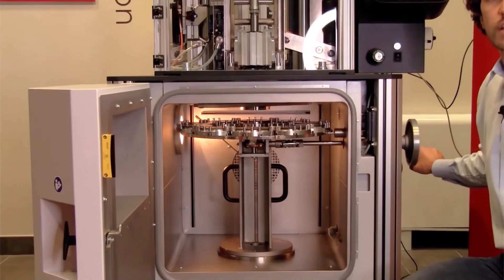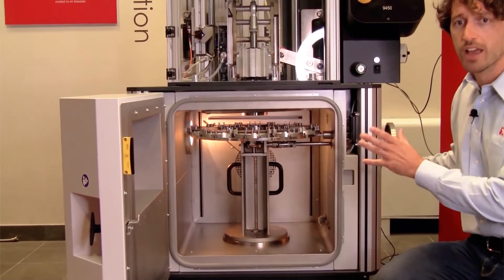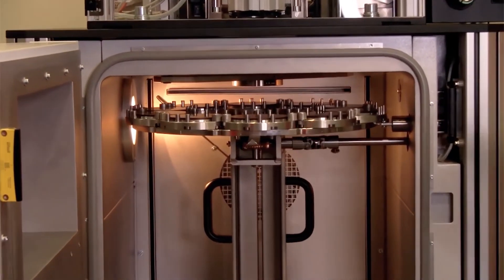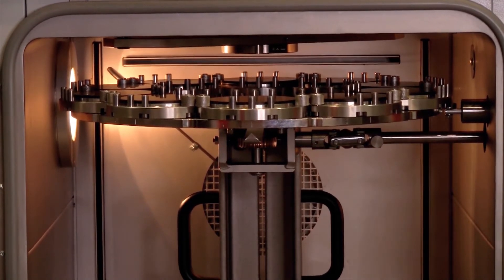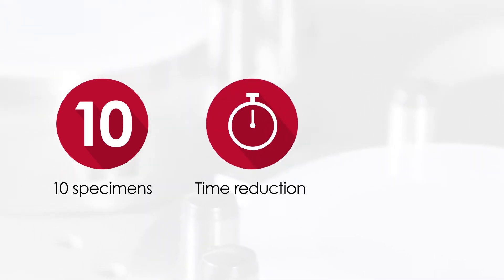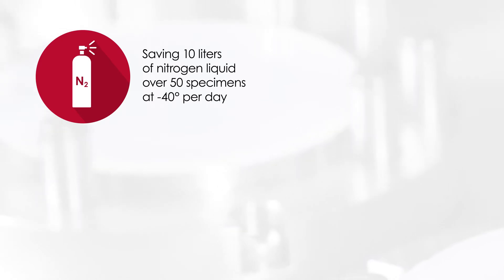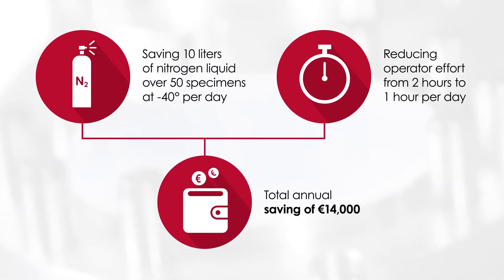Its versatility allows testing both thin films and rigid plastics. If you are concerned about any possible positioning error, the carousel system is equipped with sensors that finely control the disc positioning. Using the carousel system to condition and test 10 specimens inside the thermostatic chamber is crucial to speed up testing as well as reducing liquid nitrogen consumption — avoiding opening the chamber after each impact can save more than 10 liters of liquid nitrogen every 50 specimens and reduce by half the operator's time, mostly wasted waiting for thermal stability.